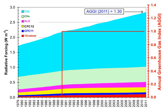Atmospheric concentrations are determined by the balance between sources — emissions of the gas from human activities and natural systems — and sinks, the removal of the gas from the atmosphere by conversion to a different chemical compound or absorption by bodies of water. The proportion of an emission remaining in the atmosphere after a specified time is the airborne fraction (AF). As of 2006, the annual airborne fraction for CO2 was about 0.45, increasing at a rate of 0.25 ± 0.21% per year over the period 1959–2006.